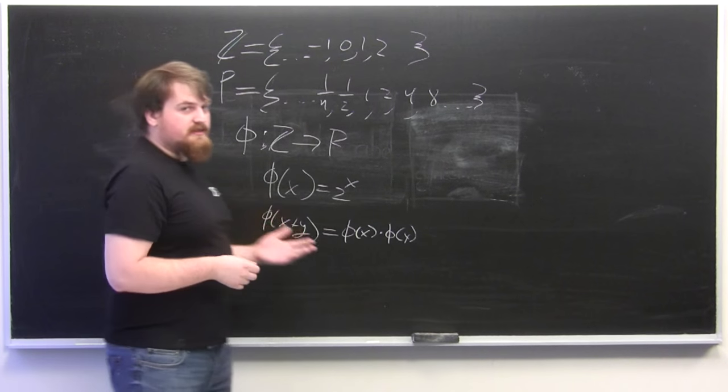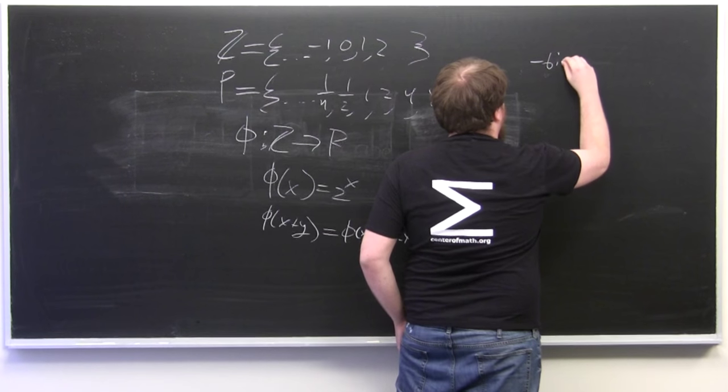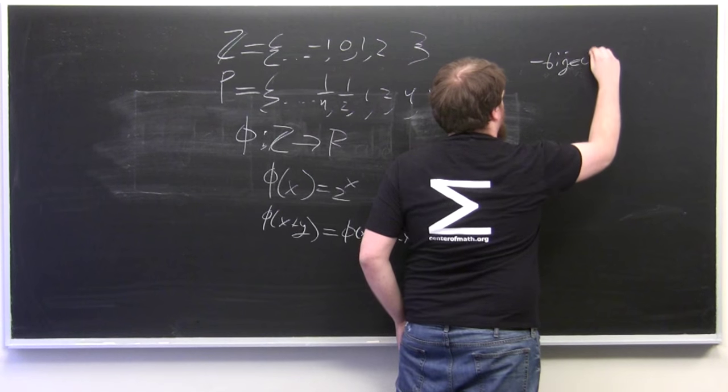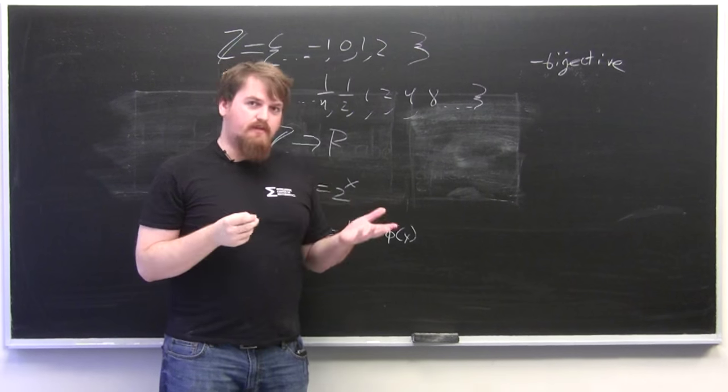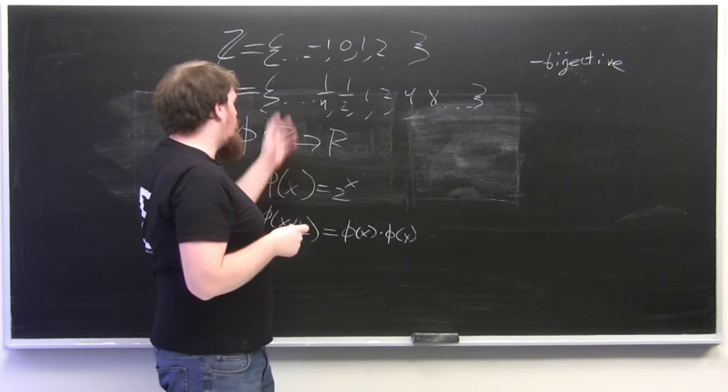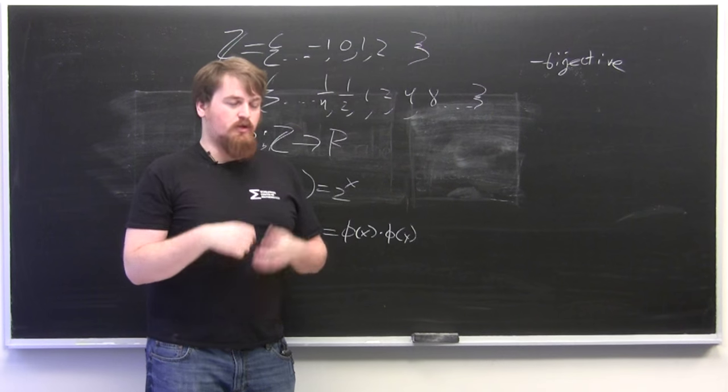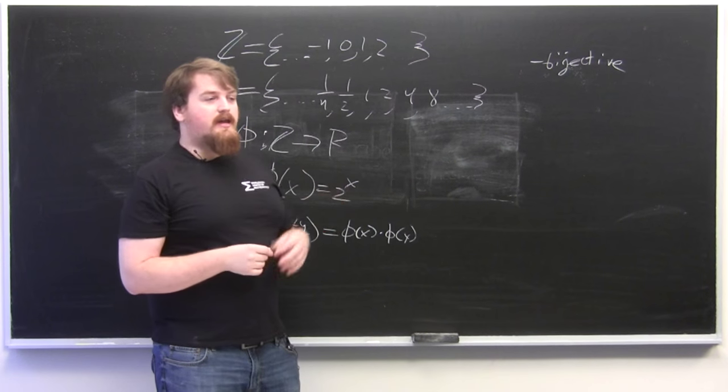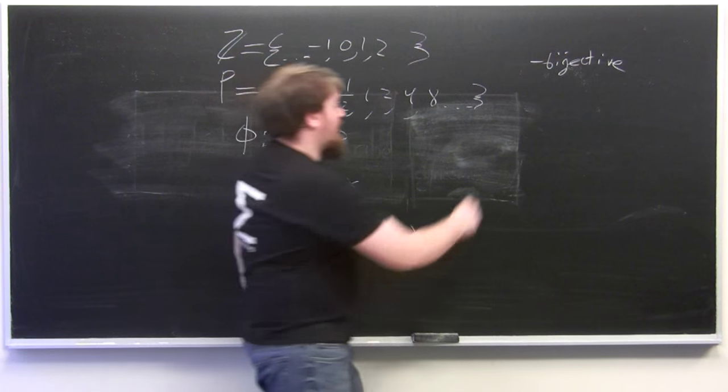So an isomorphism is just a function which is bijective in that it has an inverse or equivalently that it maps to the whole of P, it's onto, and then it maps a single element to a single element, it's one to one. Any isomorphism has to be bijective.